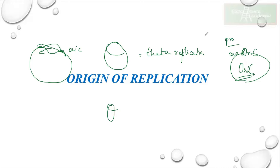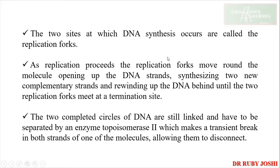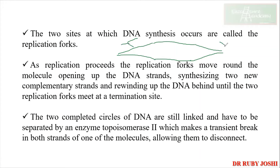The first stage of replication involves identification of the origin of replication. In bacteria there is only one origin, so the complex of proteins comes and binds to this site, opens up the helix, and starts replication. DNA replication occurs bidirectionally — as discussed in the previous class — creating a replication bubble on both sides. The two sites at which DNA synthesis occurs are called the replication forks.